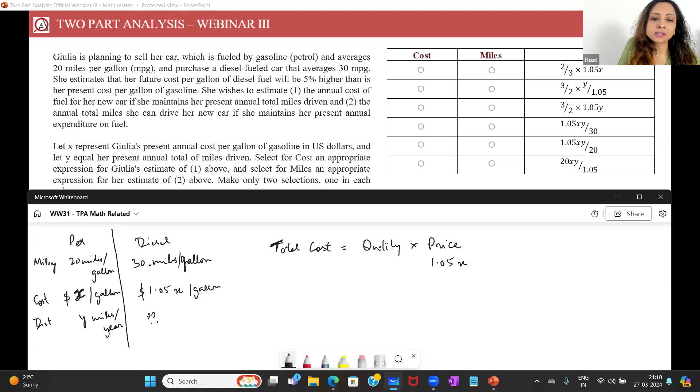Total quantity of fuel used. Look at this: I have mileage which is miles per gallon. I need the total gallons of fuel used. For one, for my point one, this is equal to y miles as well because if she maintains the same distance driven for the entire year, this will be y miles per year. How will I find the total gallons that she consumes per year? It will simply be y upon 30, that is the distance driven upon the mileage.